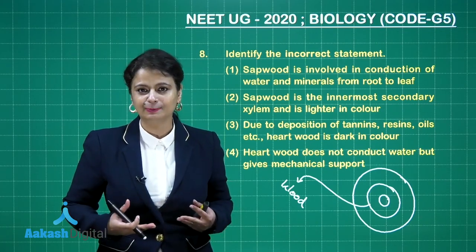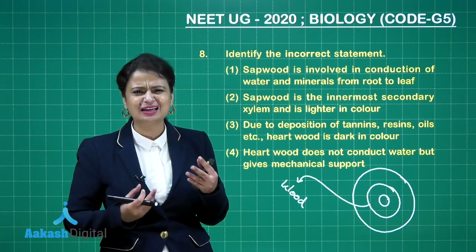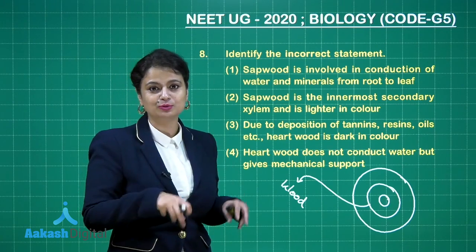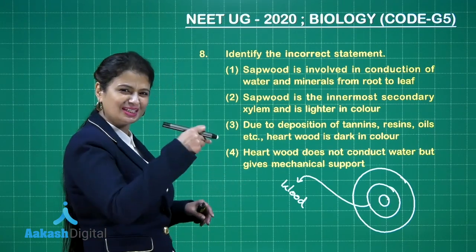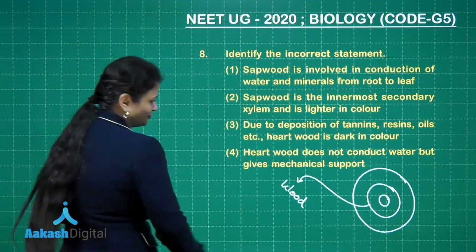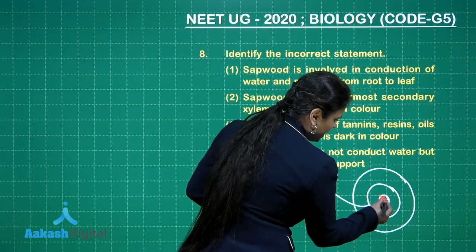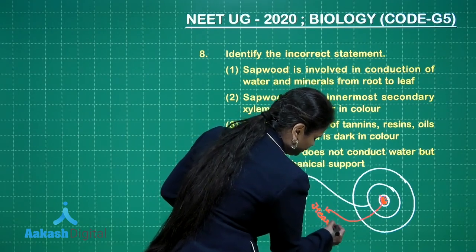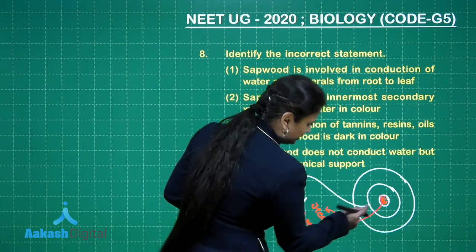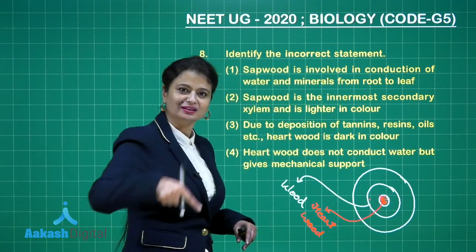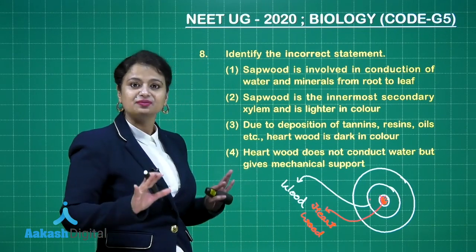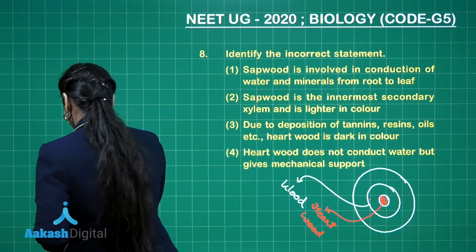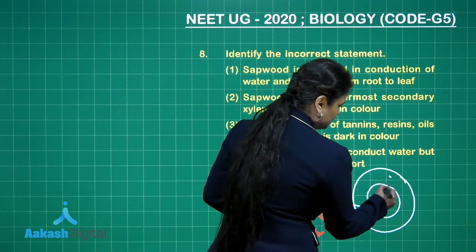The wood in the center is non-functional because vessels and tracheids present in the wood are now filled up with substances like gums, tannins, and essential oils. This wood filled with all these compounds is known as heartwood. It is called heartwood because it is present in the heart of the plant. It is hard, dark in color, and non-functional with respect to conduction. The wood present at the periphery is light in color, functional, and involved in conduction of water — this is known as sapwood.